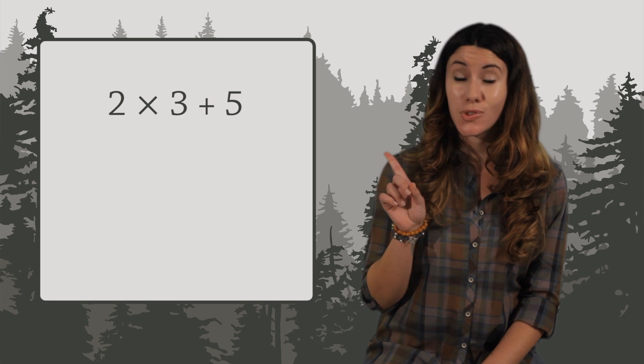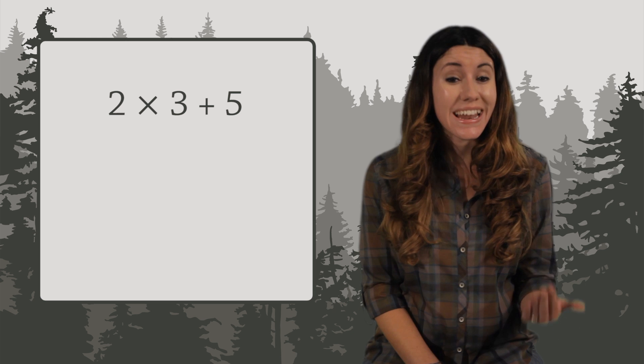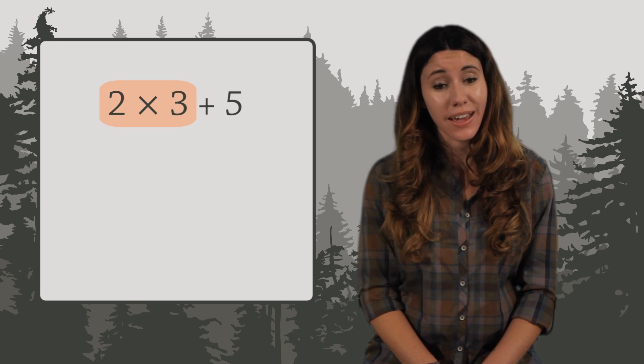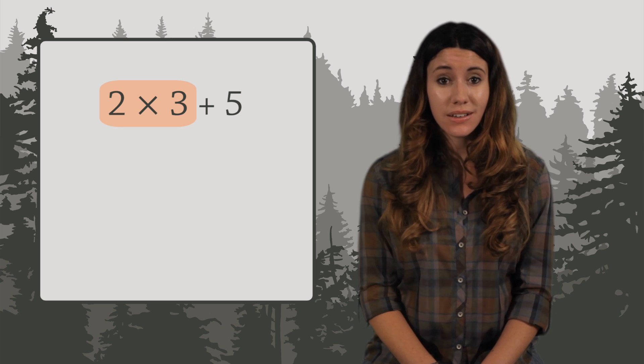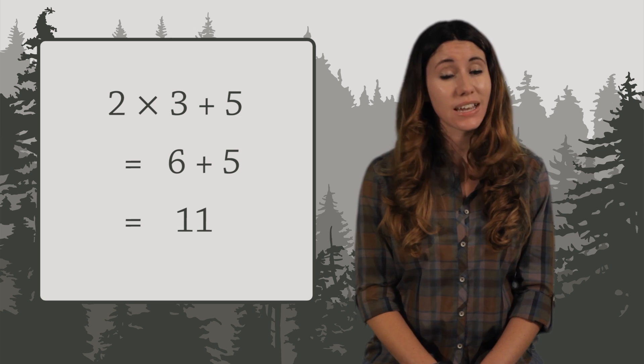Let's compute 2 times 3 plus 5. Be careful, there's a multiplication and an addition. And the math rulebook says you multiply before you add. So we first multiply 2 times 3. This leaves us with 6 plus 5. And when you add 6 plus 5, you get 11.